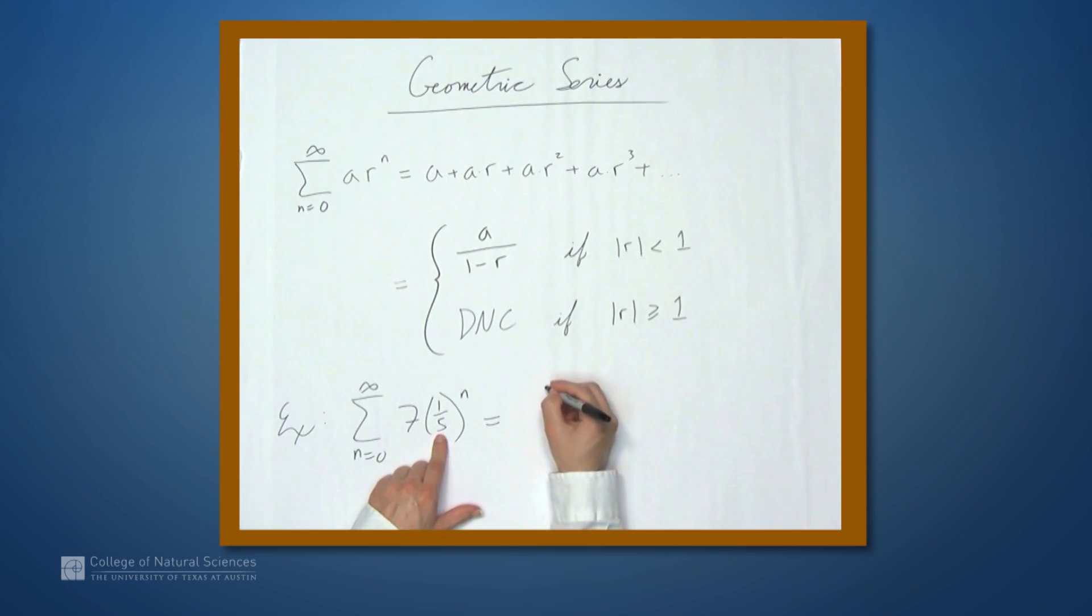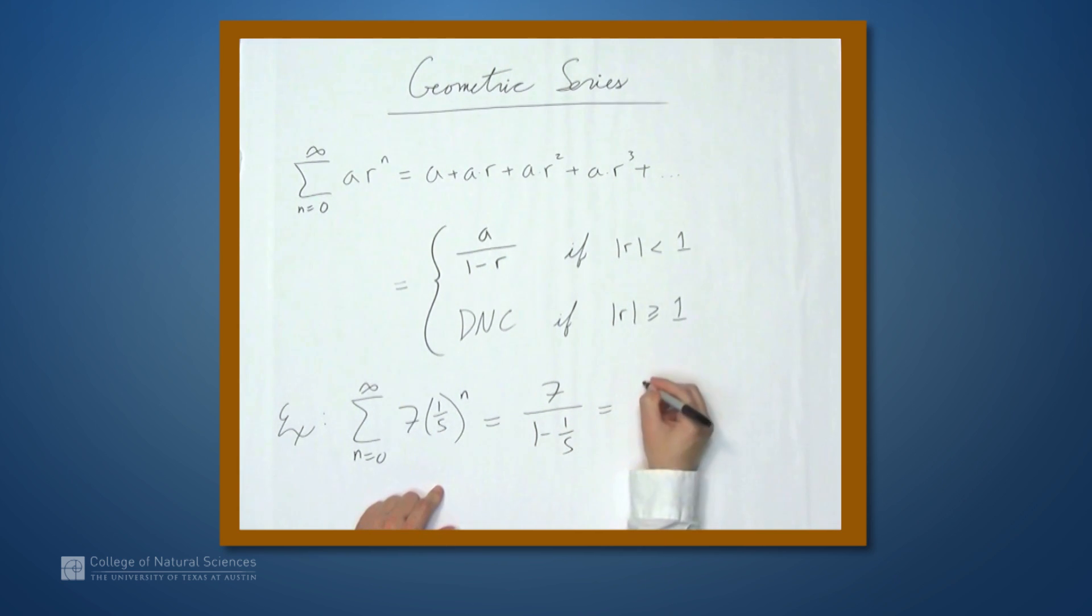So by the formula, this equals 7 over 1 minus 1 fifth. So this is 7 over 4 fifths, or 35 over 4. And that's about as easy as it can get to determine the exact value of a series.